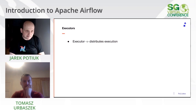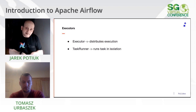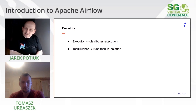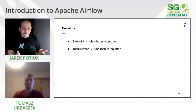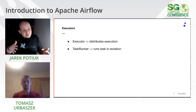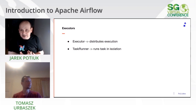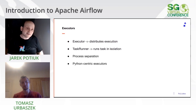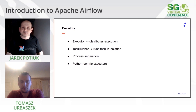Inside each worker there is a task runner that provides isolation at the Python process level, so even many tasks on the same machine don't interact. They are isolated at the process level rather than the container level — which is both good and bad. It's not perfect isolation, but it's fast: you can easily iterate with Python without preparing special container images for every task.